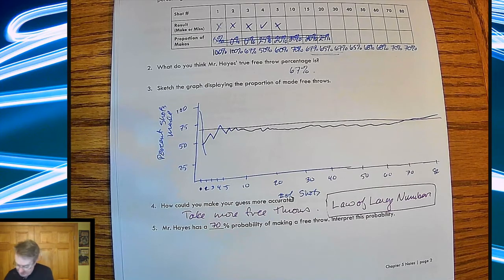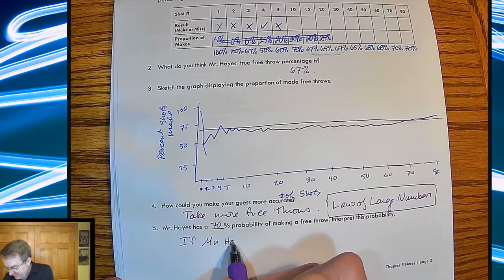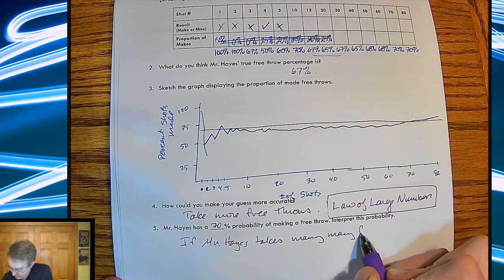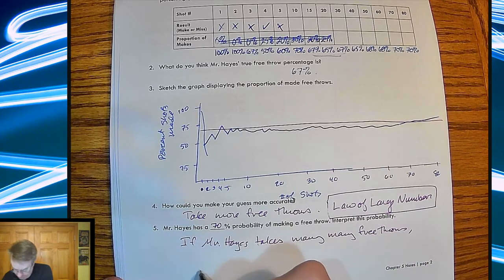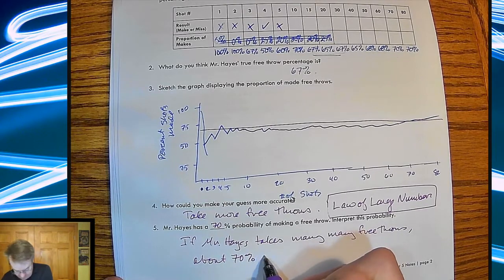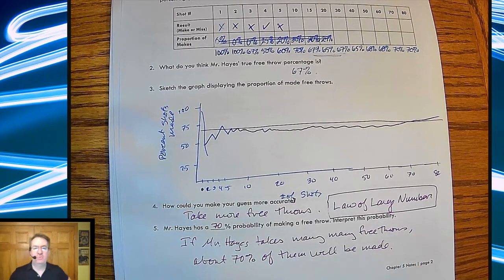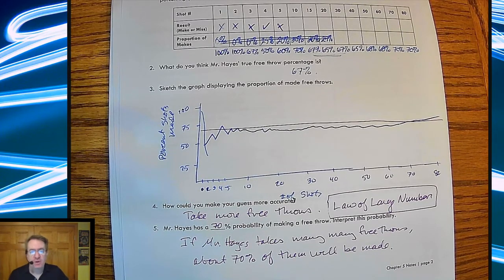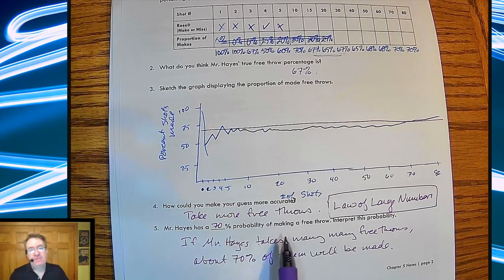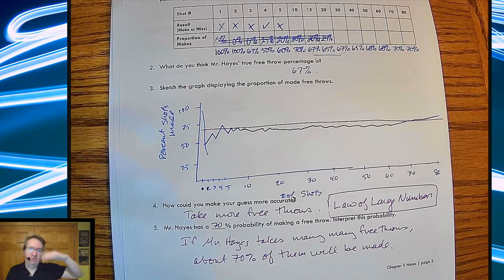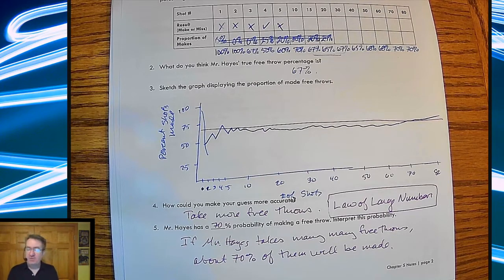So interpret this probability. So what you're going to end up doing here is that, if Mr. Hayes takes many, many free throws, about 70% of them will be made. Now, notice a couple of things here. I'm not saying I'm going to make 70% long-term. Because remember, whatever sample you take generally can't show you what the true population is going on. But if I have a 70% probability, that just says, and this is the way you're going to need to interpret this the rest of the year. At 70%, if you take a lot of samples, in this case a lot of free throws, and keep on making many, many, many free throws, it's going to average out to be about, not average out, about 70% of them will make it in. You're not going to say exactly 70% because you have no way of predicting that.